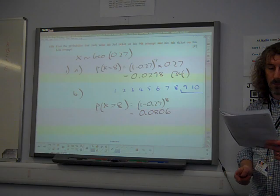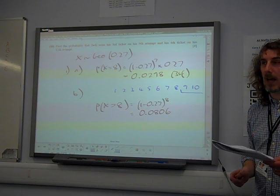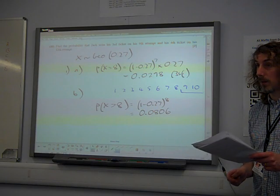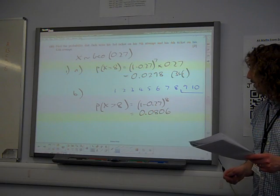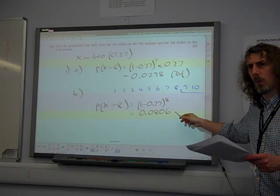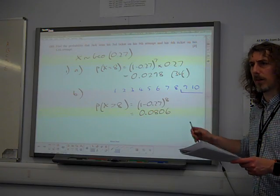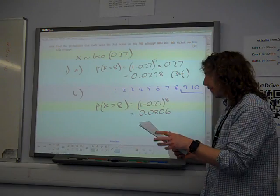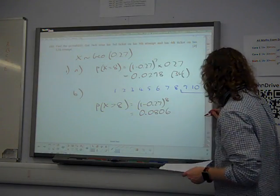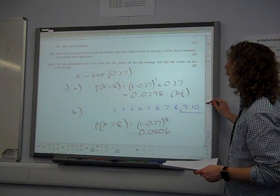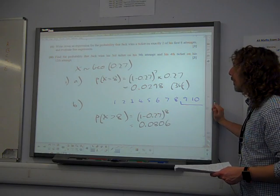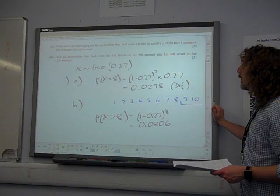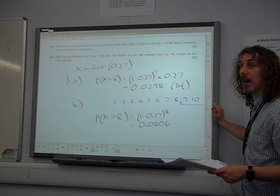And that would also not get the mark. Okay. 0.0806. You did actually get a mark for 0.08065. Okay. Part, what are we up to? Part 2. Write down an expression for the probability that Jack wins a ticket on exactly two of his first eight attempts, and evaluate this expression.